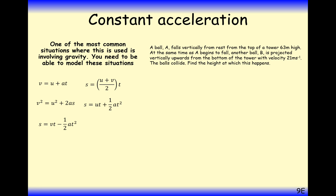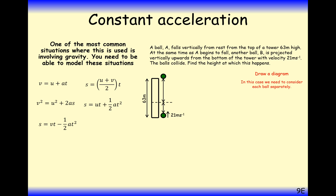Final question: ball A falls vertically from rest off the top of a 63-metre high tower. At the same time, ball B is projected vertically upwards from the bottom of the tower with an initial speed of 21 metres per second. The balls collide — find the height at which this happens. We need to create two simultaneous equations from the SUVAT formulas.